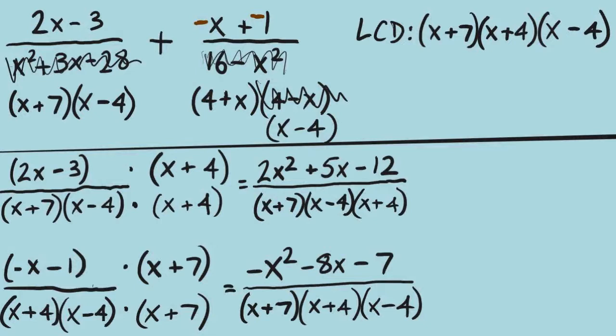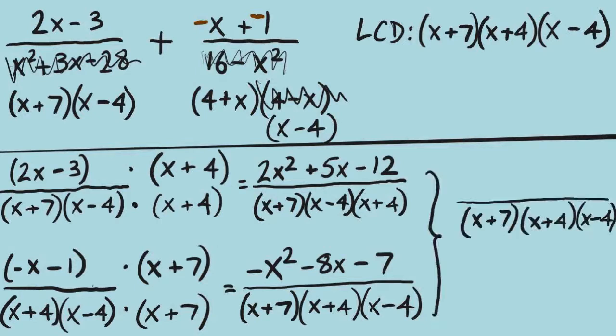We're at the light at the end of the tunnel. Our denominators match, so we are ready to combine these two fractions into a single fraction using the LCD. In the numerator, combining like terms: 2x squared with negative x squared gives positive x squared; positive 5x with negative 8x gives negative 3x; and negative 12 with negative 7 is negative 19. A quick check that we cannot factor the numerator confirms we cannot cancel. There is our final answer.